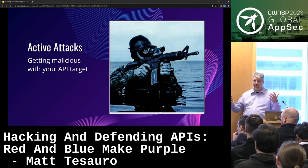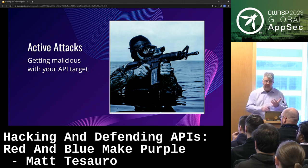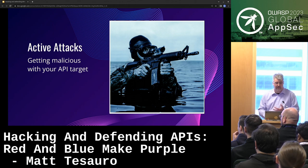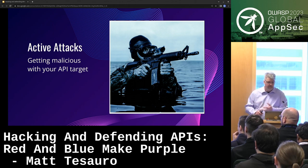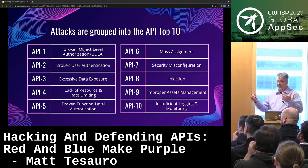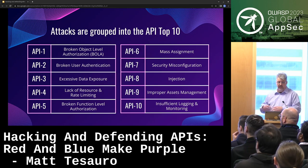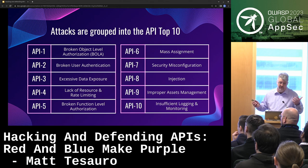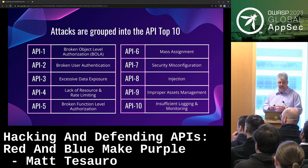This is the fun part of the talk. We've figured out where the APIs are, we have a reasonable idea how to interact with them — now we get to be naughty with them. To do that, I'm going to take the OWASP API Top 10 and talk about those individually, because that's the best list of types of attacks for APIs that I could find.